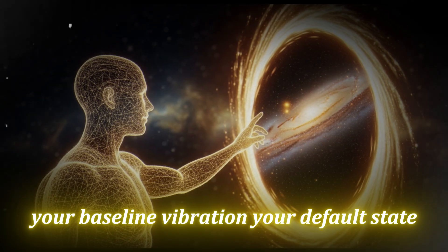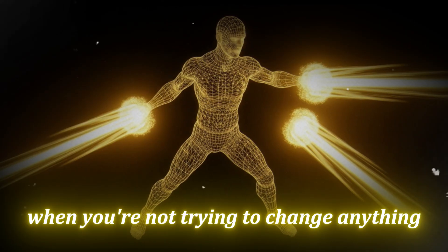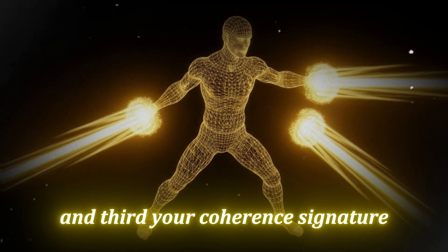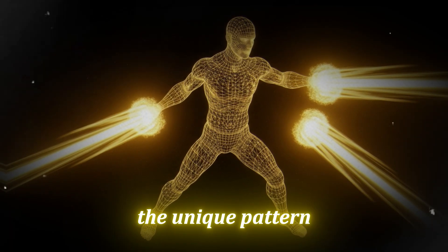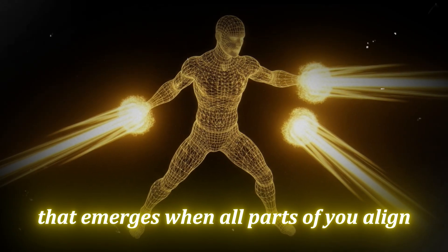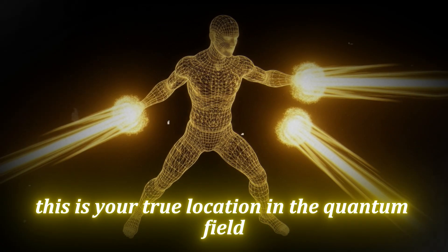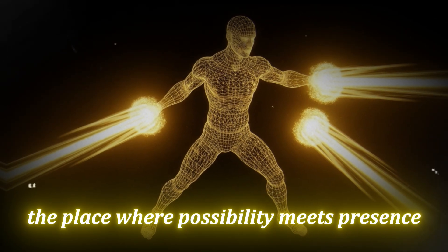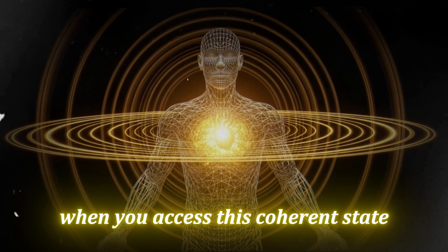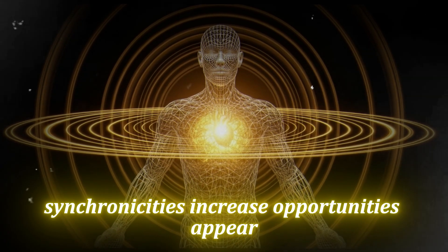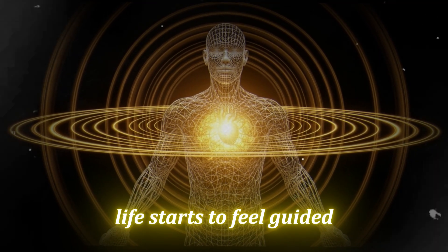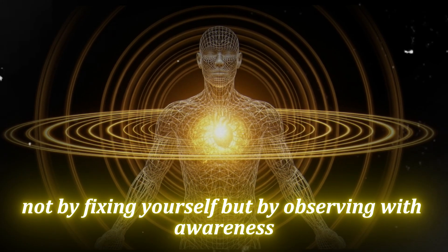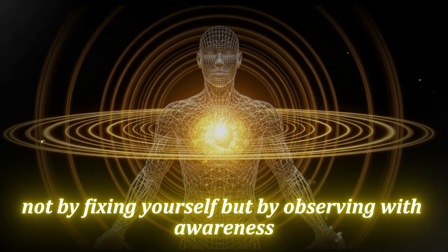Second, your baseline vibration. Your default state when you're not trying to change anything. This is your energetic climate. And third, your coherence signature. The unique pattern that emerges when all parts of you align. This is your true location in the quantum field. The place where possibility meets presence. When you access this coherent state, synchronicities increase. Opportunities appear. Life starts to feel guided, not chaotic. And you can tune into it any time, not by fixing yourself, but by observing with awareness.